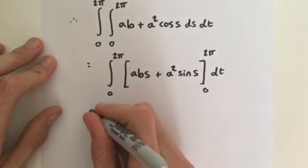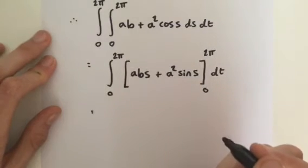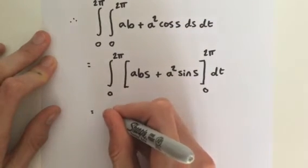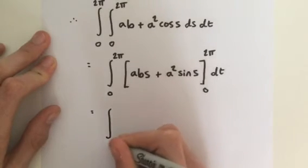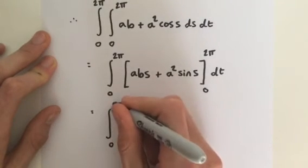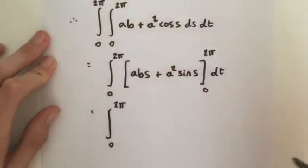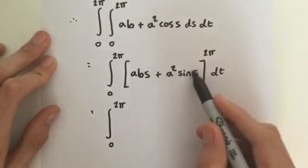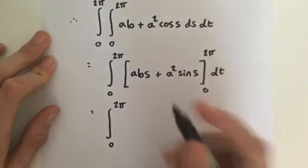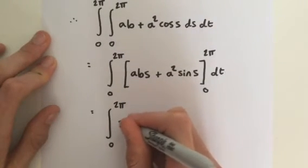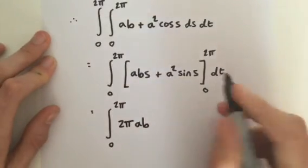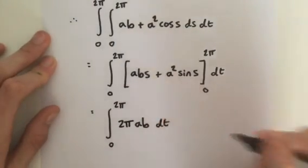So this is equal to the integral from 0 to 2π. If you plug in 2π for sine of s, you just get 0, so that becomes 0. So overall, we get 2πab. And we integrate that with respect to dt.